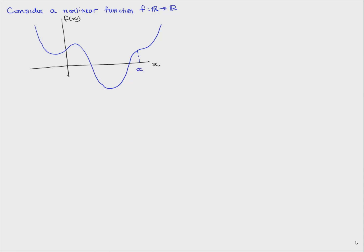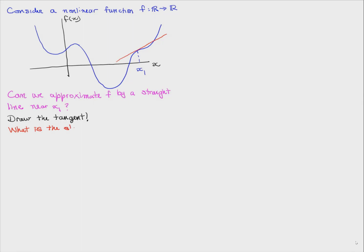Let's take a point x1. The question is, near this point, can we approximate this non-linear function by a straight line? What kind of straight line can we think about? We can draw the tangent. If we draw the tangent like that, what's the slope of the tangent? It's the derivative of the function — f prime evaluated at x1.